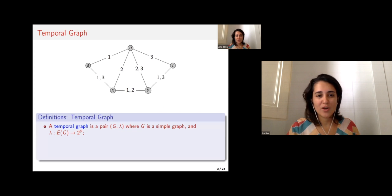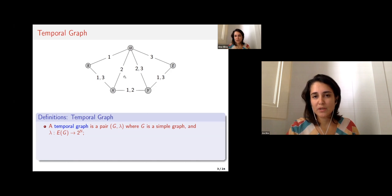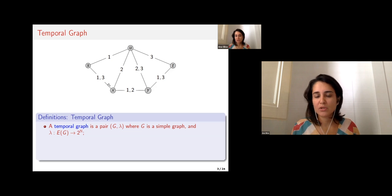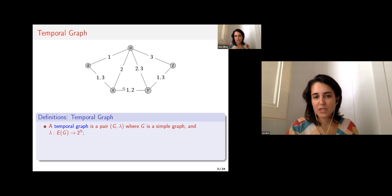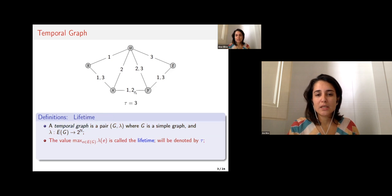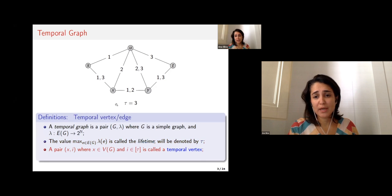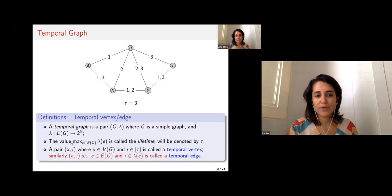I will go through definitions a little faster since we have seen them multiple times today. I will be working with the model where we have a graph and each edge appears in a certain subset of times. I'll represent the times an edge appears — for instance, edge xy appears in times one and two. Working only with finite things, I call the lifetime the maximum appearance of an edge, denoted by τ. A temporal vertex is a pair of vertex and time, and a temporal edge is a pair of edge and time.